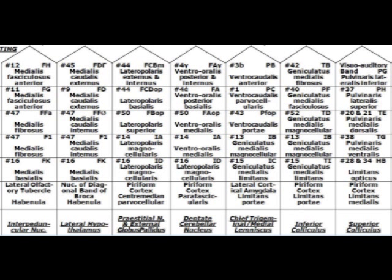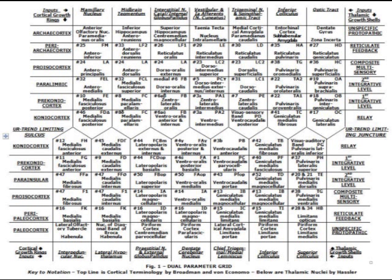The evolutionary gradient extending from the paleocortex via the insular lobe is similarly shown in more detail here, the bottom half of the dual parameter grid. This version similarly shows that the human cortical parcellation schemes of Brodmann (1909) and Von Economo (1929) correlate topographically on essentially a one-to-one basis with the dual parameter grid. Each cortical area described by Brodmann and Von Economo corresponds to schematically unique age and input parameter coordinates.